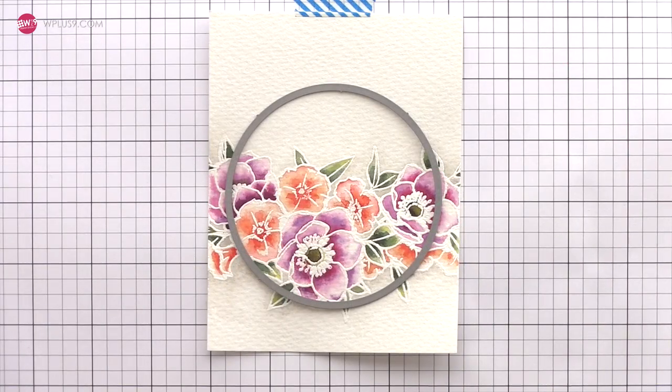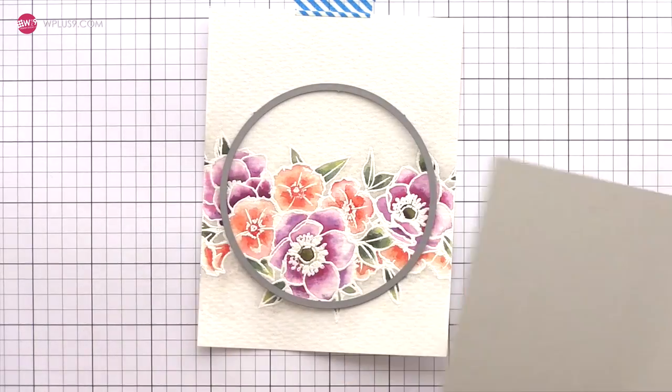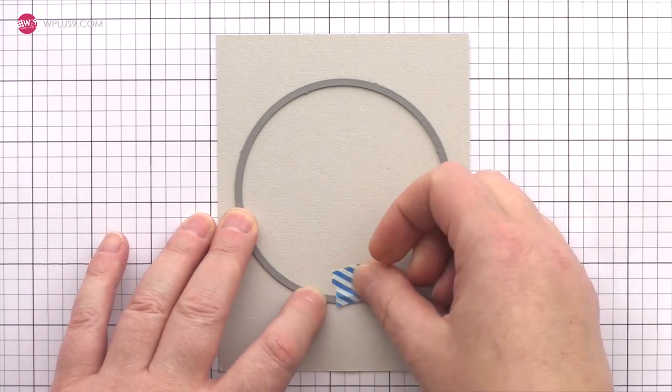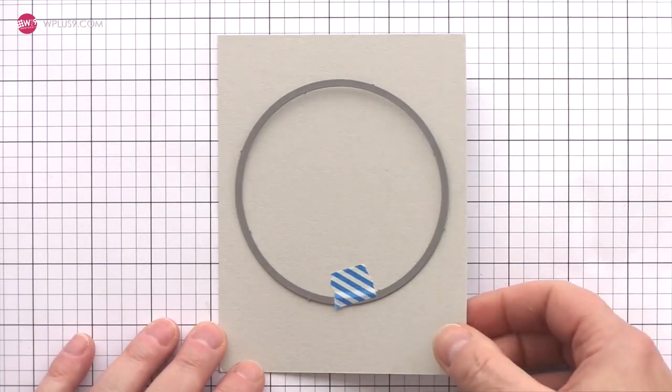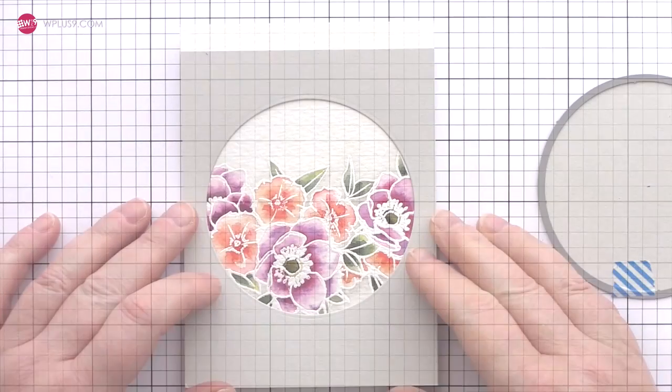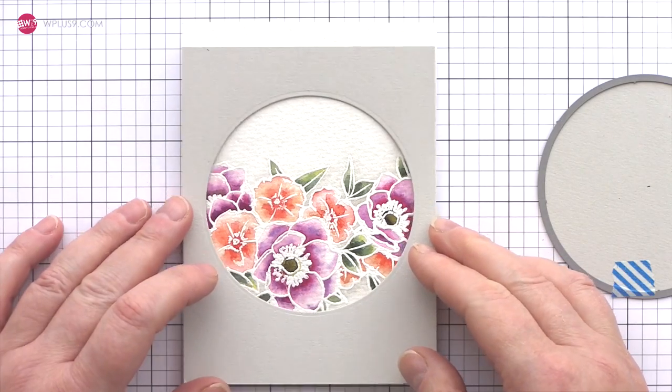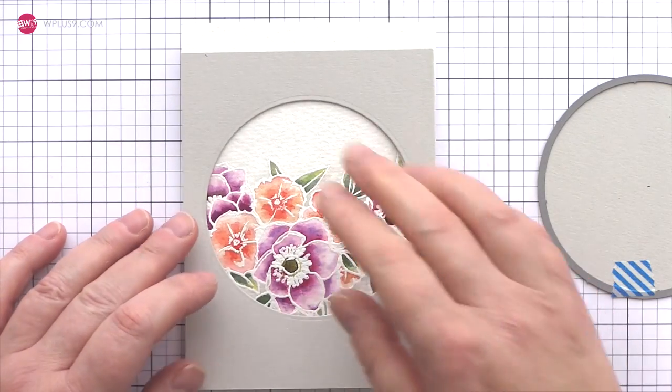When I first decided to use the Kind Souls set I realized that there was already a stunning range of examples by Dawn and the design team. However, I didn't spot a shaker card so that's what I decided to do with this watercolor piece. I've used a circle die to cut an opening in a piece of grey card and then checking that the flowers will show through nicely.